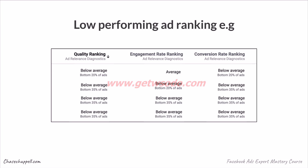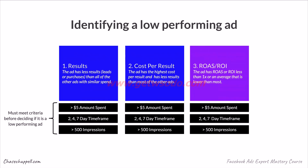Some of the low performing ad ranking indicators that Facebook uses are quality ranking, engagement rate ranking, and conversion rate ranking. A lot of times you'll see 'below average,' which is like the bottom 20%, or bottom 35%, or bottom 10%. Anytime you see something like that, it generally means your ad is not performing by Facebook's standards, which can affect your performance and results. It's important to have average or above average on all your ads to get the most reach, because Facebook will cap you if you don't.